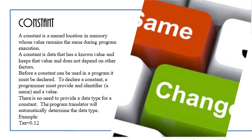To declare a constant, a programmer must provide what is called an identifier, which is, of course, a name and a value. So, you're going to give it a name and you're going to give it a value. There is no need to provide a data type for constants. The program translator will automatically determine the data type. For example, the name that we're going to give it is tax. The value will be equal to 0.12. So, throughout this program, tax will always be 0.12.